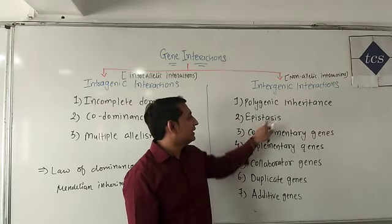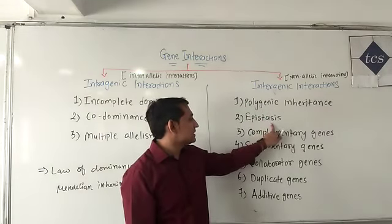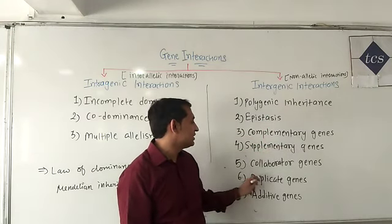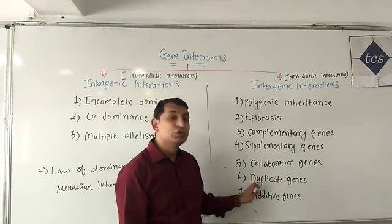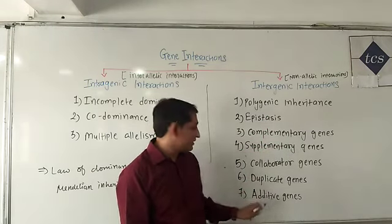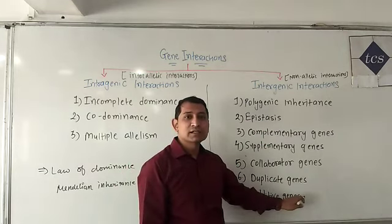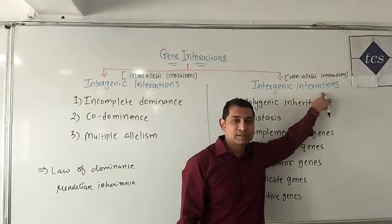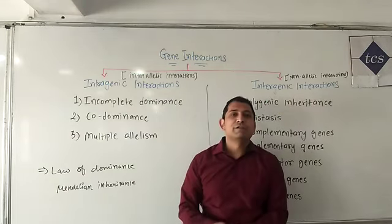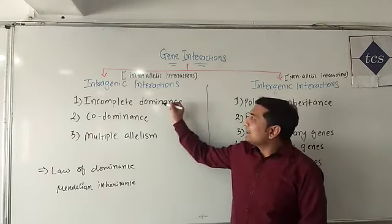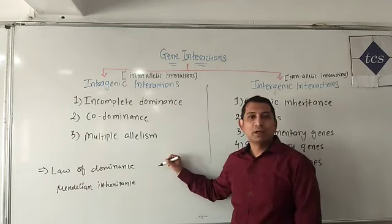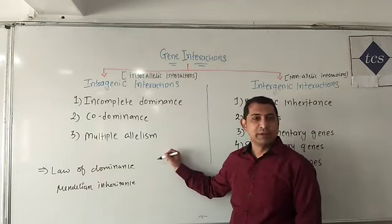Polygenic inheritance, epistasis, complementary genes, supplementary genes, collaborator genes, duplicate genes, and additive genes are the examples of intergenic interactions. We will start with intragenic interactions and study each phenomenon one after the other in brief.